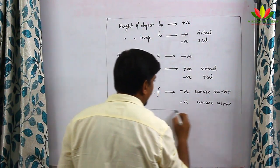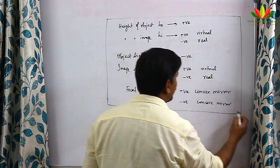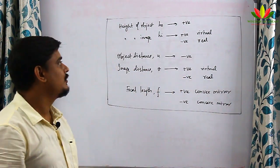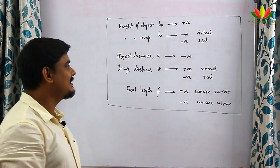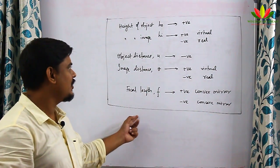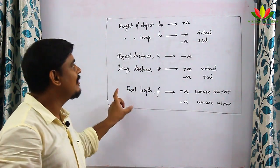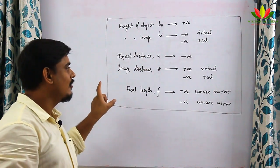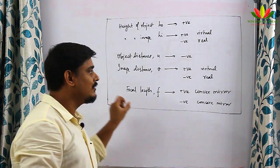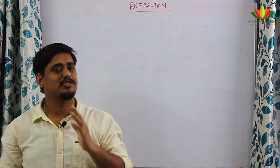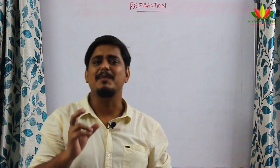This is the chart by which you can remember which quantities will be positive and which will be negative. Please write this in your notebook — it will be very important when you solve numerical problems. Today's topic of discussion is refraction of light.